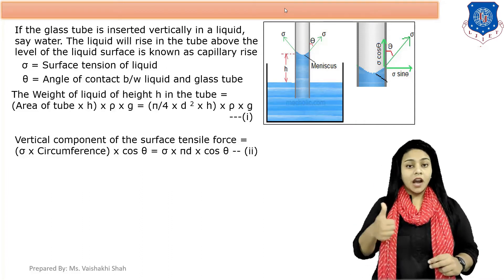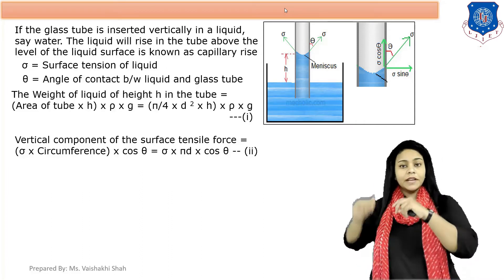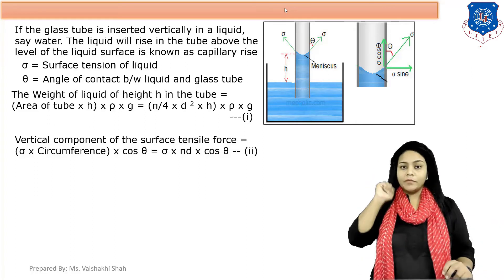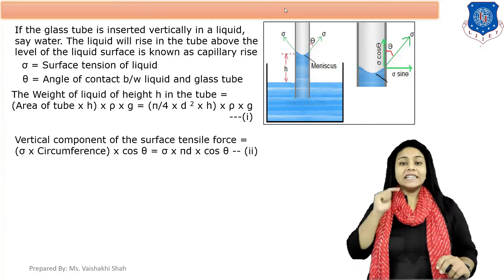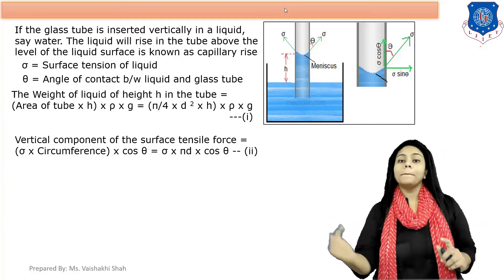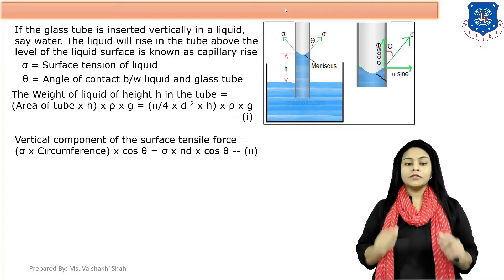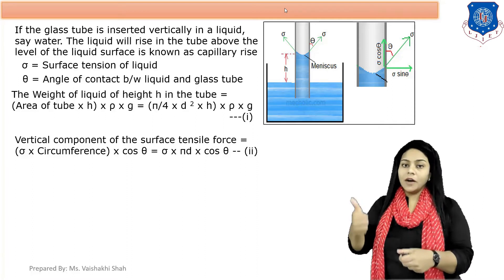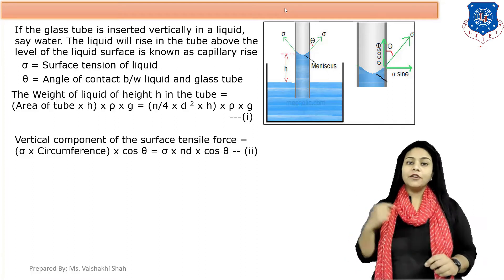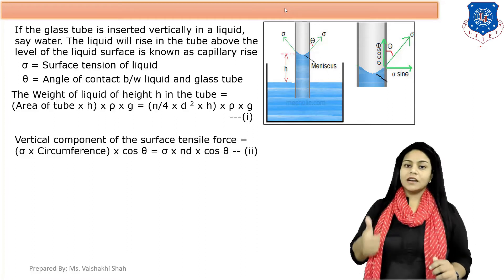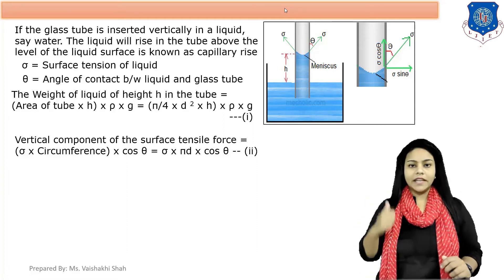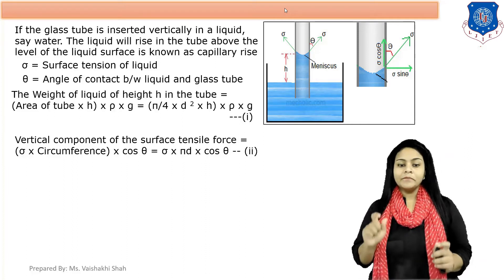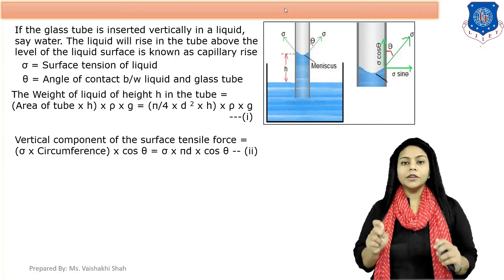The component acting in the vertical upward direction is Sigma cos theta. Surface tension always acts from the periphery or circumference. So the vertical component of surface tension acting upward equals Sigma × circumference × cos theta. The circumference is πD, so the vertical component = Sigma × πD × cos theta. This is equation number two.